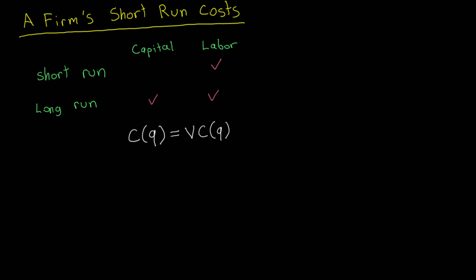An example of a variable cost is labor. As a firm hires more workers, it's going to be increasing its production, but that's also going to be increasing its cost because the firm has to pay those workers a wage. The second component of the total cost is the firm's fixed cost, which does not vary with the quantity of output produced. An example of a fixed cost is a monthly lease on a building — it stays the same regardless of how much the firm produces. Variable cost plus fixed cost gives you the firm's total cost in the short run.